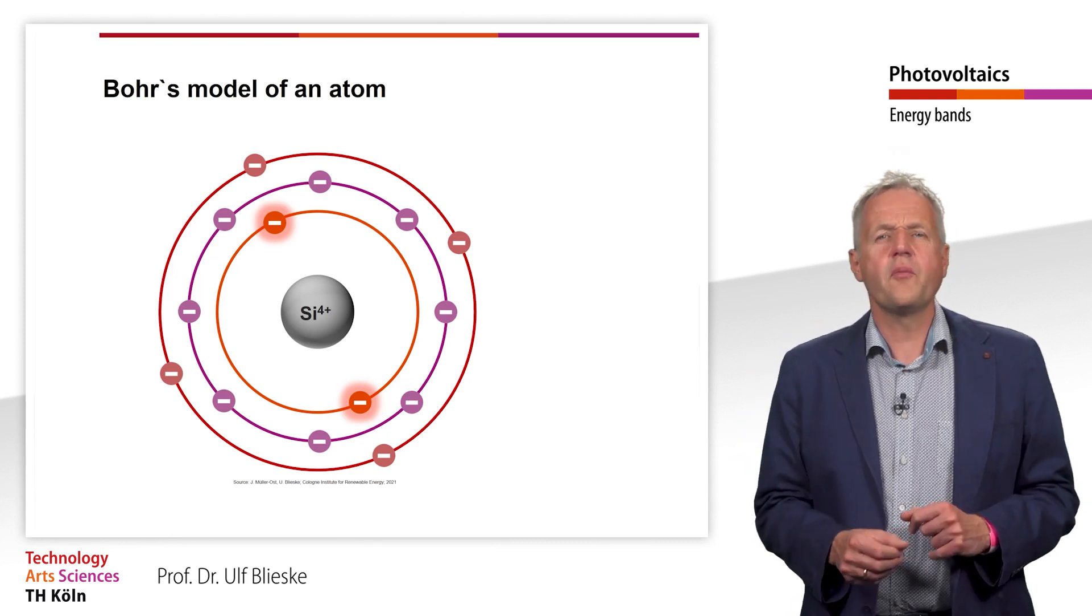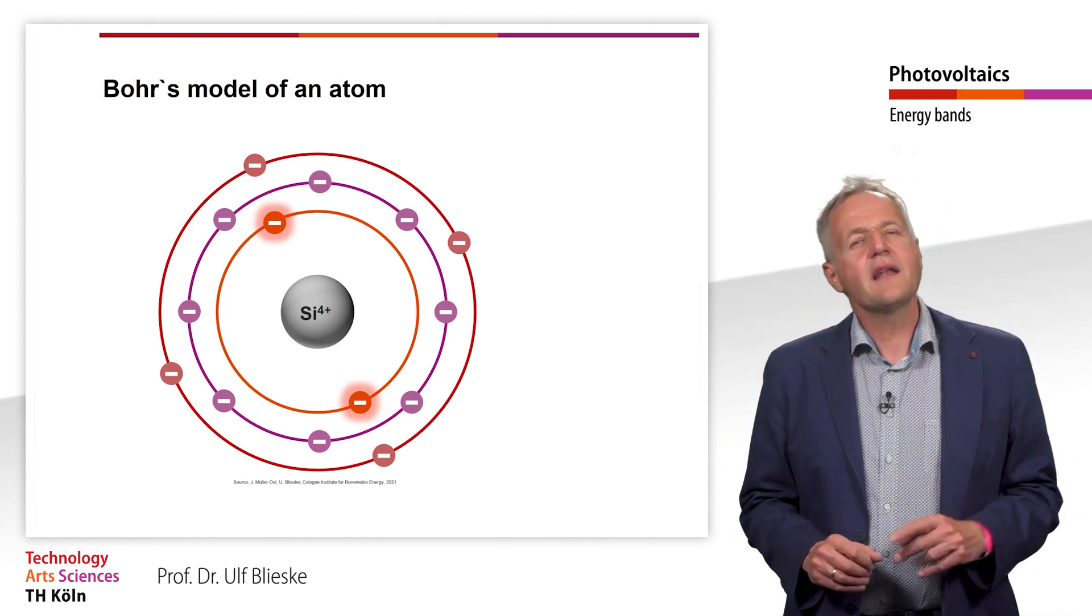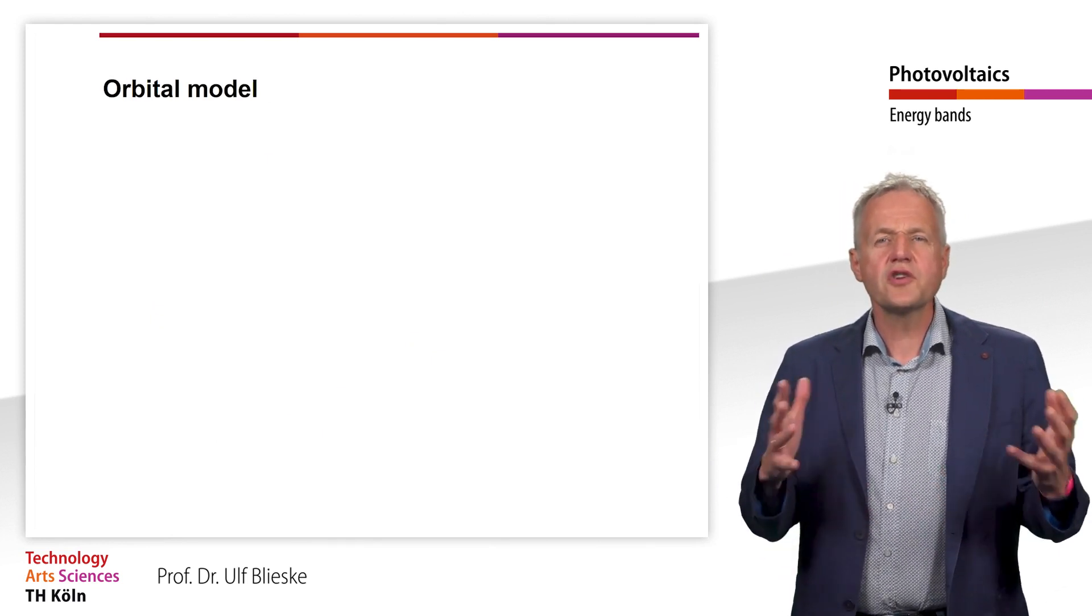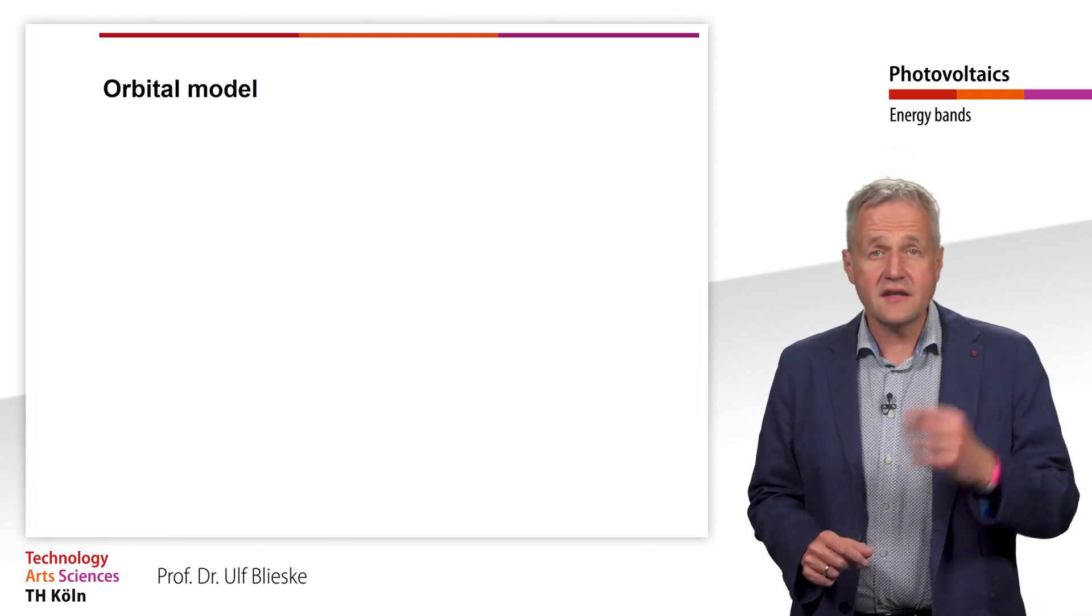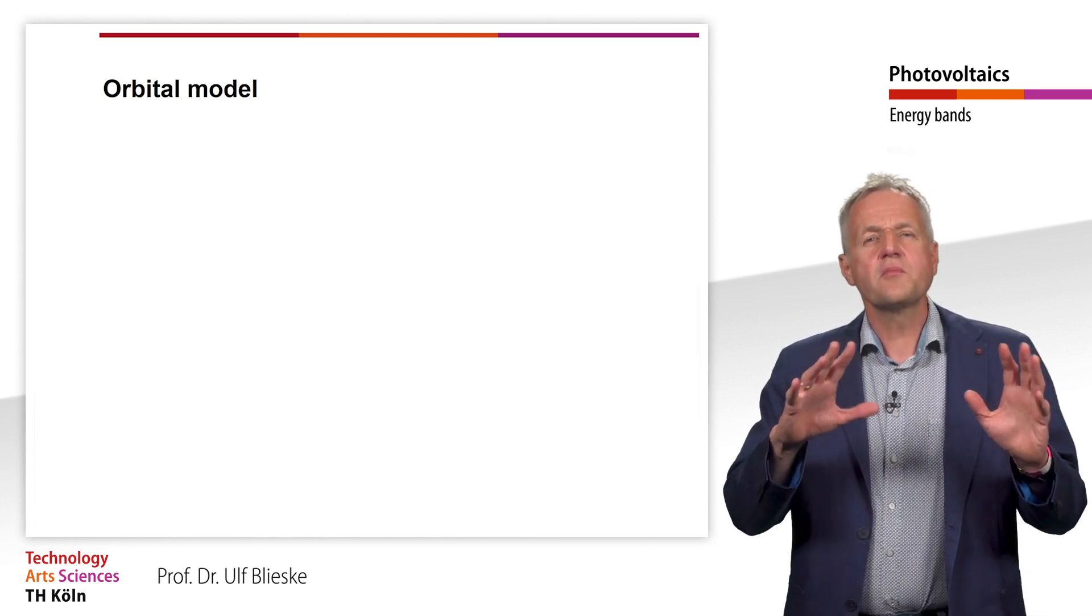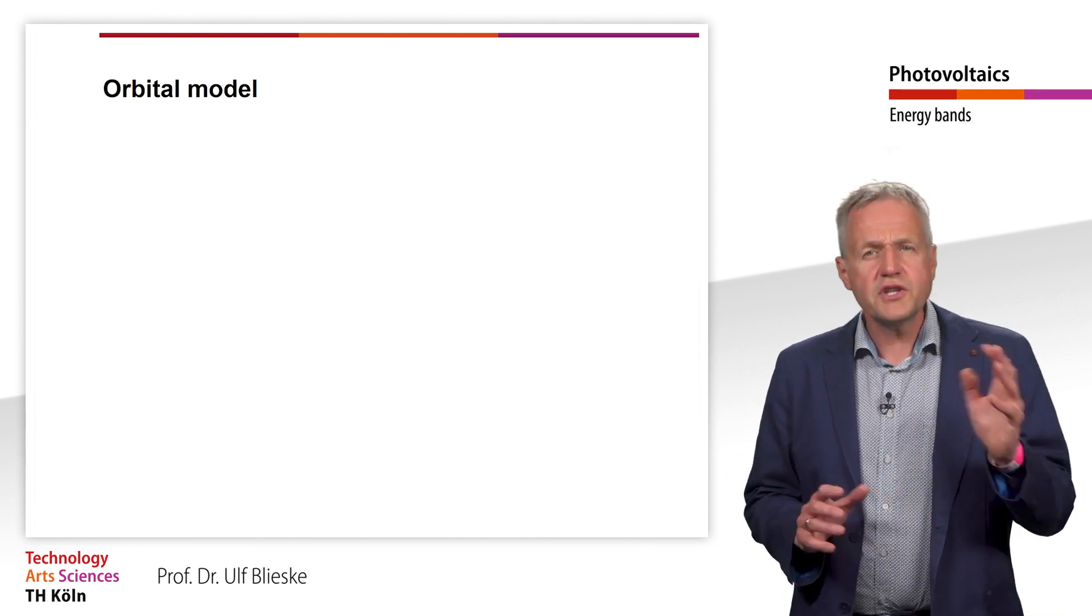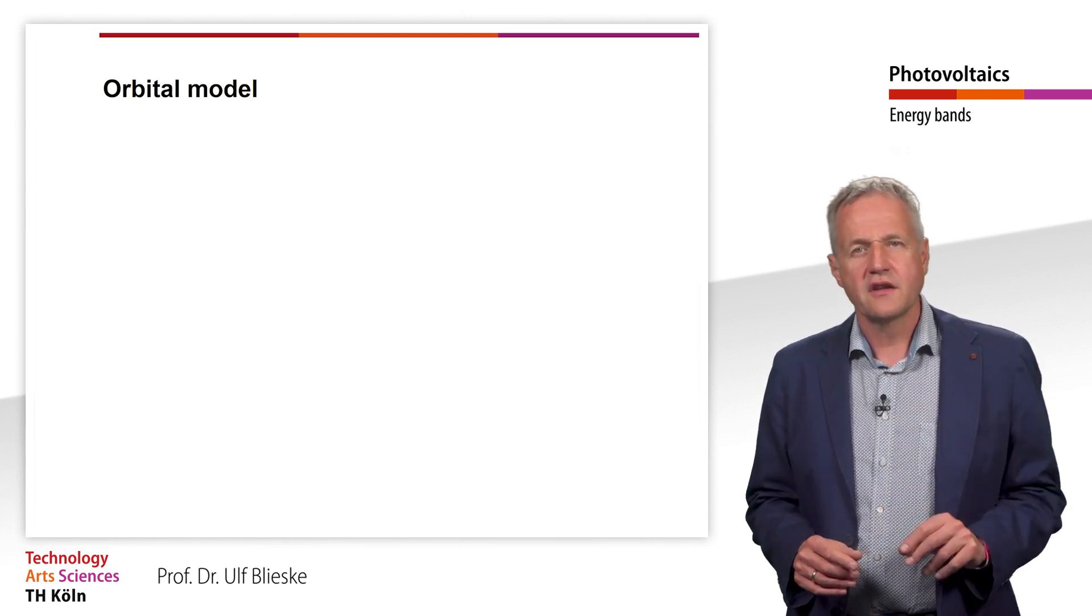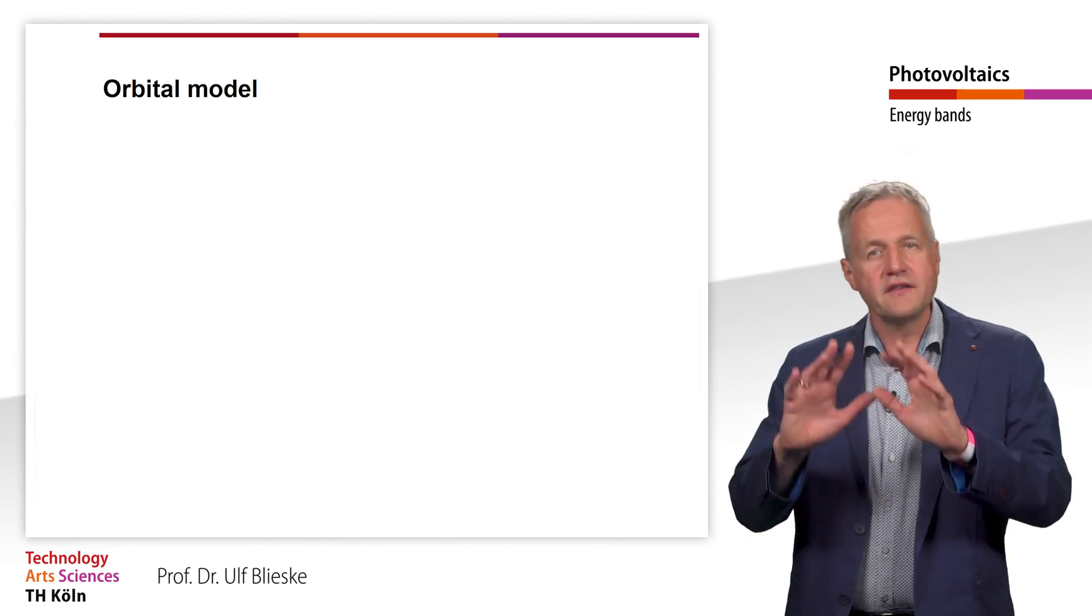A further development of Bohr's atomic model is the orbital model. Unlike in Bohr's atomic model, the electrons here do not move in circles around the atomic nucleus. Instead, only a certain probability is given for each electron with which it would be found at a certain location. This probability is described by the orbitals.